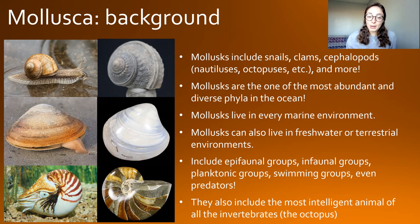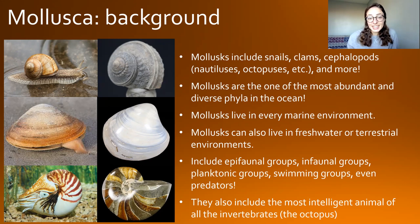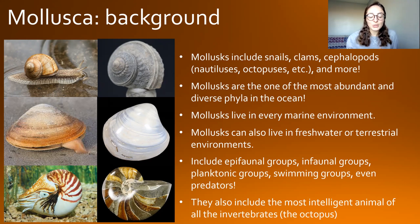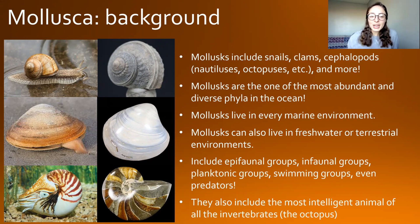Clams are in the class Bivalvia and are therefore called bivalves because they have two valves. And then we have cephalopods, which include nautiluses, octopuses, squids, belemnites, extinct ammonites, and more. All of these groups are extremely diverse — you wouldn't think that a squid and a slug have much in common, but they do, and that's being mollusks.